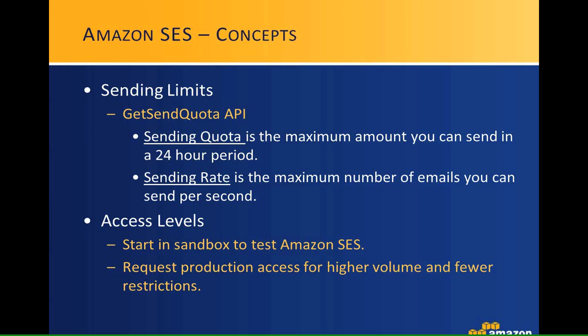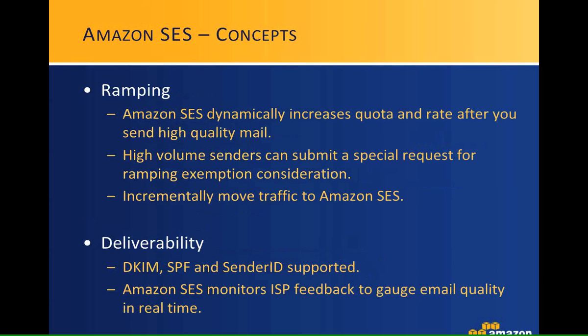Requesting production access requires filling out a specific form available on the Contact Us page on the AWS portal. We'll review your request and try to get back in a timely manner. We'll send links at the end of the webinar for easy access.